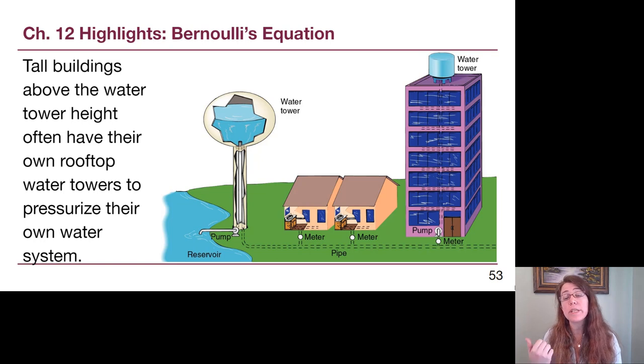And if you've ever seen really tall buildings, especially downtown in cities, tall buildings that are above the height of their area water tower often have their own rooftop water towers to pressurize their own water system. Because if they didn't, the people at the very top levels of this building, when they turned on the tap, the water would go from the water tower at really low pressure, at high pressure down through the ground. And then as it went up and up in the building, it would lose more and more pressure and then you would get just a trickle of water unless you had to actively pump it every single time that somebody turned on the tap. So for the same reason that cities build water towers, buildings often build their own if they're a little bit too tall.